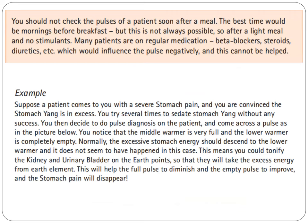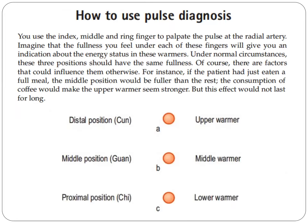Many patients are on regular medication like beta blockers, steroids, and diuretics, which would influence the pulse negatively. For example, suppose a patient comes with severe stomach pain and you are convinced that the stomach yang is in excess. You try several times to sedate the stomach yang without success. You then do pulse diagnosis and notice that the middle warmer is very full and the lower warmer is completely empty. Normally, the excessive stomach energy should descend to the lower warmer. This means you could tonify the kidney and urinary bladder on the earth point so they will take the excess energy from the earth element. This will help the full pulse to diminish and the empty pulse to improve, and the stomach pain will disappear.